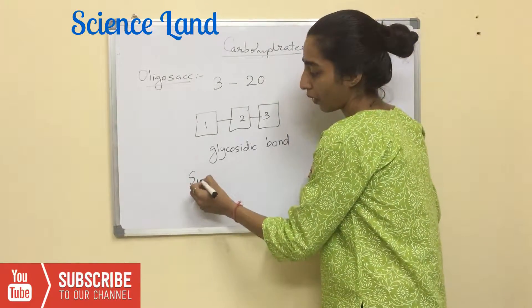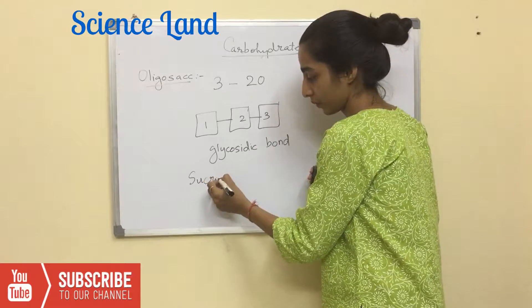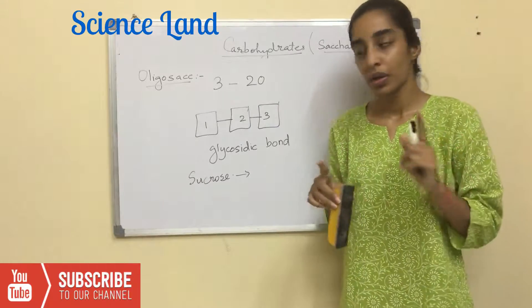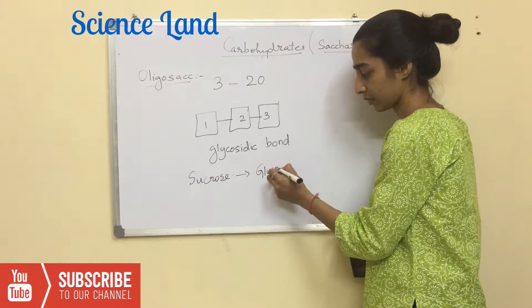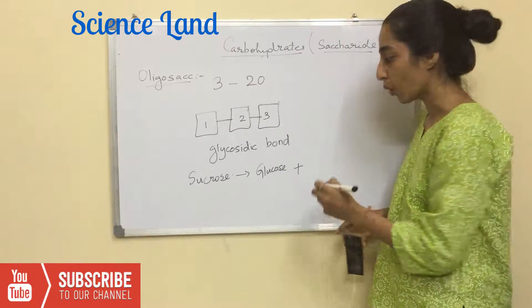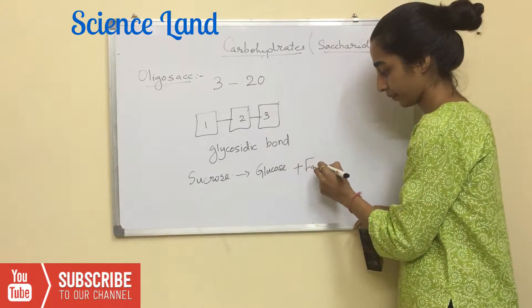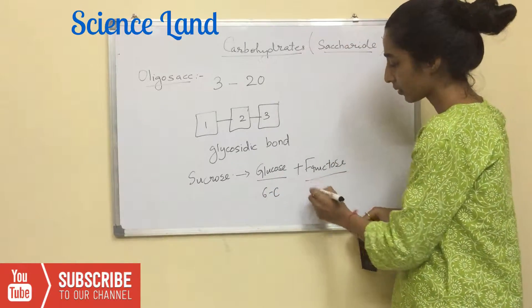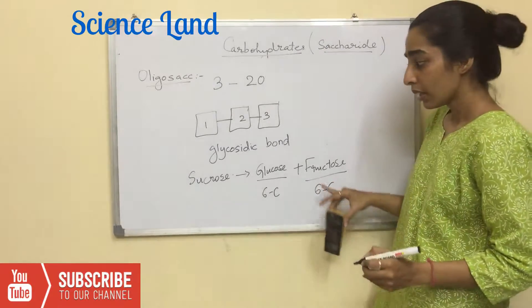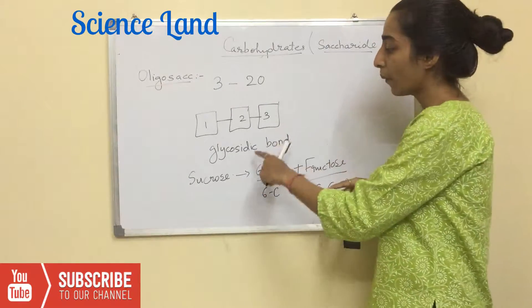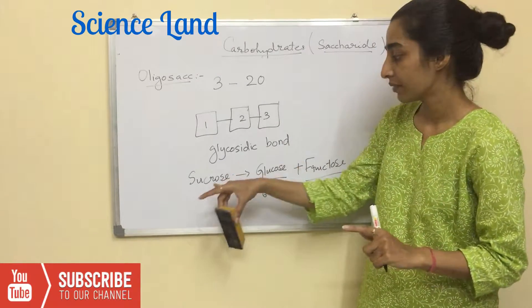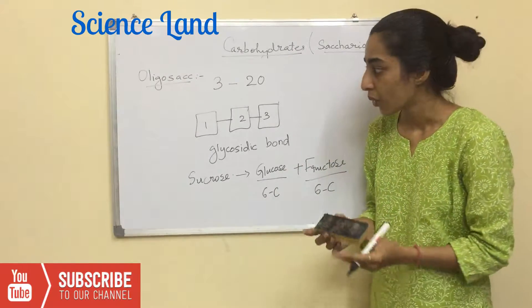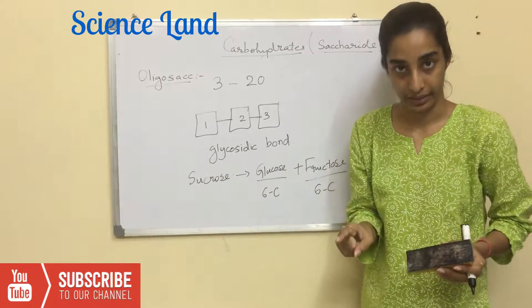For example, a molecule called sucrose. It is made up of two monosaccharide units. Which are those? One is glucose and the other is fructose. Both are 6-carbon monosaccharides. These both come together with the form of glycosidic bond and give you a molecule called sucrose. So basically sucrose is a disaccharide.